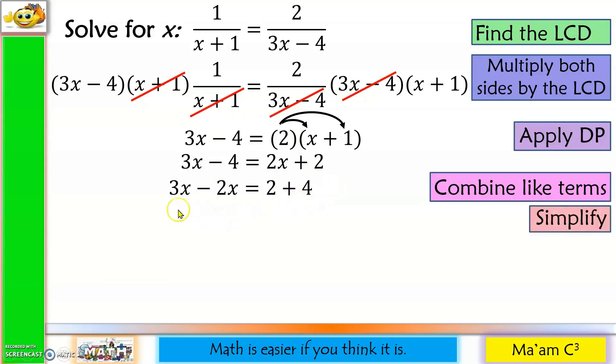Then we simplify. 3x minus 2x is x, equals 2 plus 4 is 6. Finally, let's do some checking.